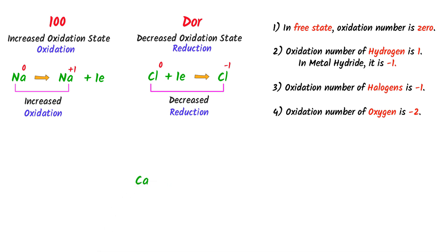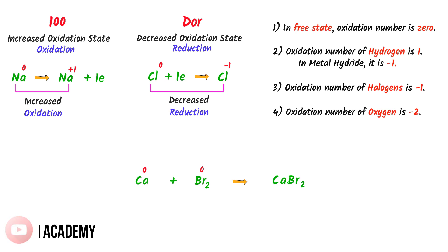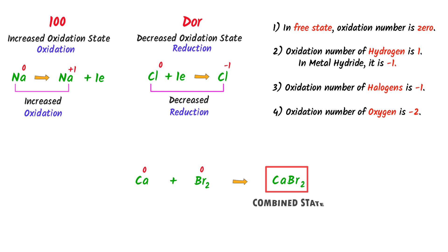For example, consider calcium plus bromine gas reacting together to form calcium bromide. According to the rules, we know that in the free state, the oxidation state is zero. So the oxidation state of calcium is zero and the oxidation state of bromine is also zero. Here, calcium and bromine combine to form calcium bromide — I call this the combined state.